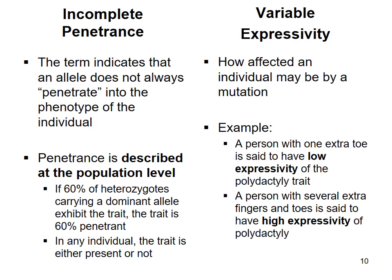Variable expressivity looks at how affected an individual might be by a mutation, stepping away from population percentage. Certain mutations have a variable expression rate — for instance, with polydactyly, some individuals might only have one extra toe, whereas other patients inheriting the same mutated genes may develop several extra toes and fingers. Low expressivity means a low level of phenotype showing through; high expressivity means severe or a high amount of phenotypical abnormalities showing through.